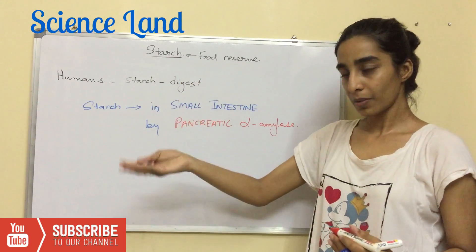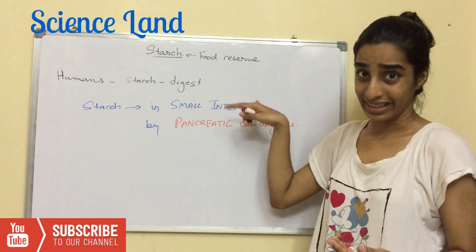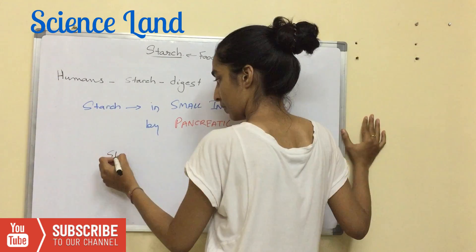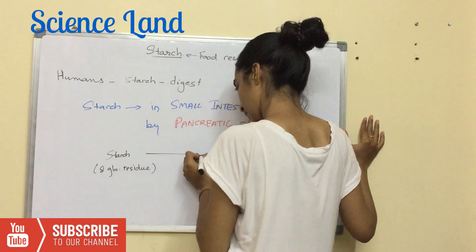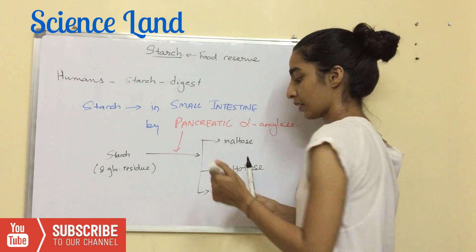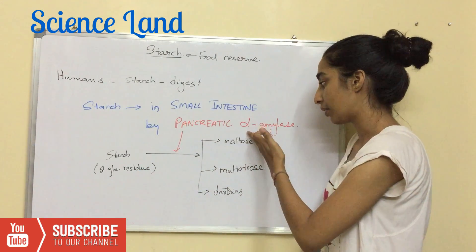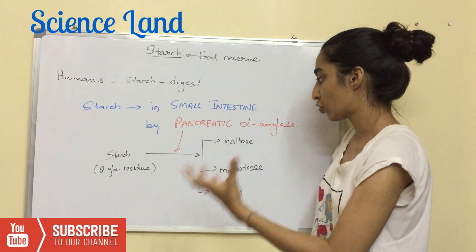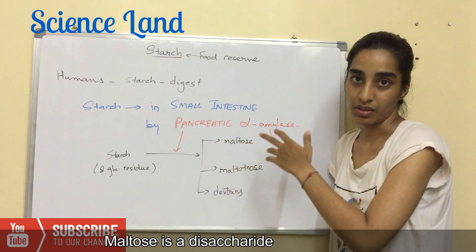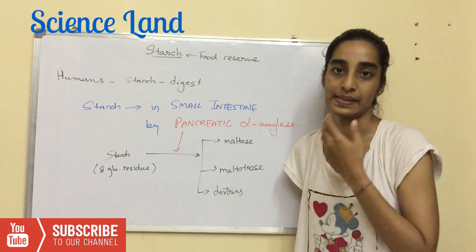From the stomach, those molecules of fewer than 8 glucose residues proceed to the small intestine, where pancreatic alpha amylase comes into picture. The starch is broken down into a mixture of maltose, maltotriose, and dextrin. Maltose is a disaccharide, maltotriose is a trisaccharide, and dextrin is an oligosaccharide.